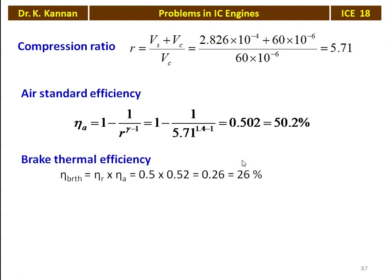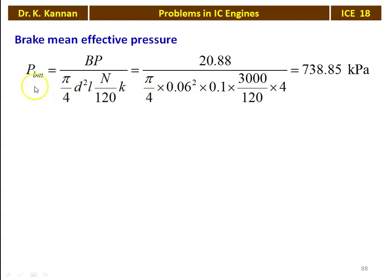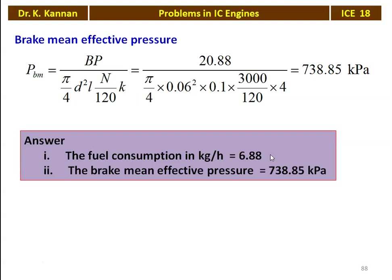Brake thermal efficiency = relative efficiency × air standard efficiency = 0.5 × 0.502 = 0.26 = 26%. Fuel consumption = BP × 3600 / (η_BT × CV) = 20.88 × 3600 / (0.26 × 42000) = 6.88 kg/hr. Brake mean effective pressure = BP / ((π/4) × d² × L × (N/120) × K) = 20.88 / ((π/4) × 0.06² × 0.1 × (3000/120) × 4) = 738.85 kPa.